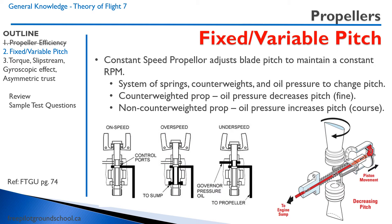There are three types of variable pitch propellers: the in-flight adjustable, the ground adjustable, and the constant speed propeller. The constant speed propeller is the most common. It adjusts blade pitch to maintain a constant RPM using a system of springs, counterweights, and oil pressure within the propeller hub. In a counterweighted prop, oil pressure decreases the pitch to a fine setting. So if you lose oil pressure, the propeller will go to a coarse setting. Conversely, a non-counterweighted prop uses oil pressure to increase pitch to coarse, with springs returning the blades to fine.